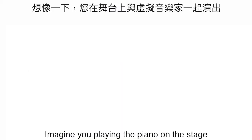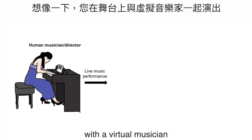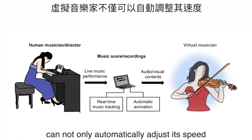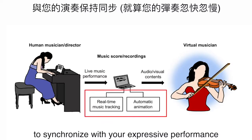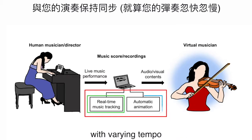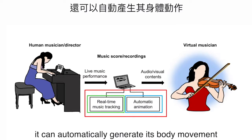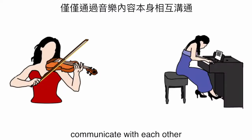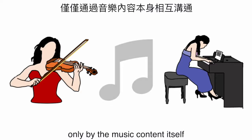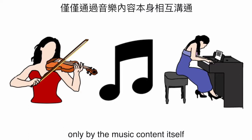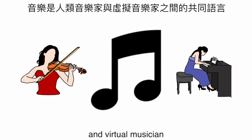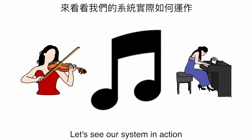Imagine you playing the piano on stage with a virtual musician which plays the violin displayed on the screen. The virtual musician can not only automatically adjust its speed to synchronize with your expressive performance with varying tempo, but also it can automatically generate its body movement. Virtual musicians and human musicians communicate with each other only by the music content itself. In other words, music is the common language between human musicians and virtual musicians.